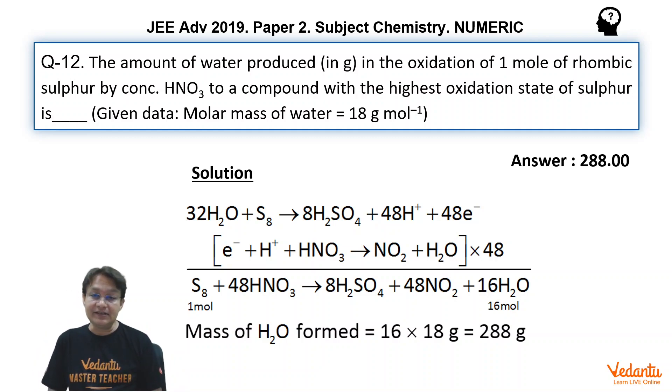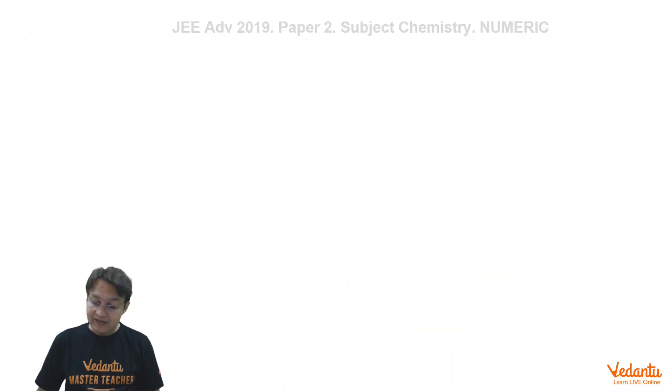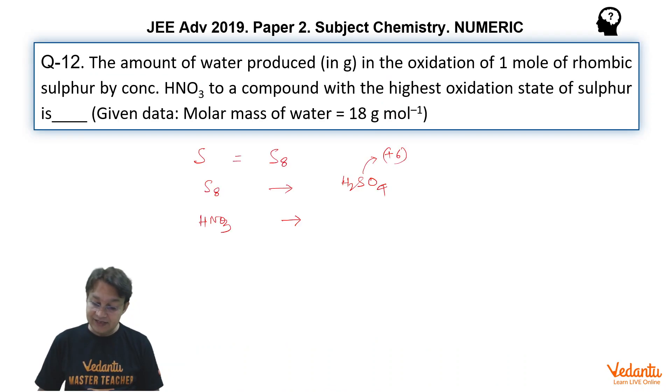I think that this is the easiest problem of this paper, but provided you know that sulphur exists in S8 oxidation state and it will change into H2SO4, of course it is given. And HNO3 in concentrated solutions changes into NO2. So if you have these informations, then the problem is simply balancing of redox reaction.